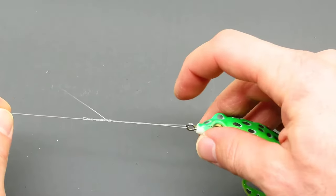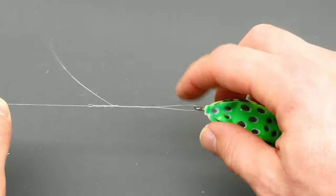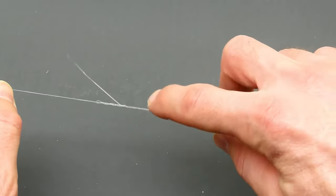Now at this point you'll want to lubricate the line with saliva or water all the way from the lure to the knot, so it doesn't burn your line as it cinches itself down.